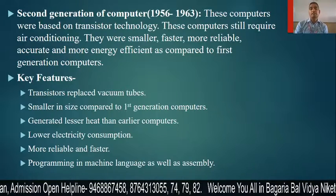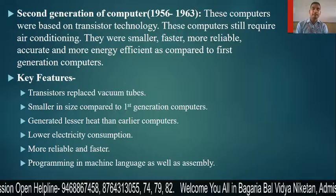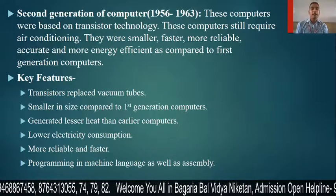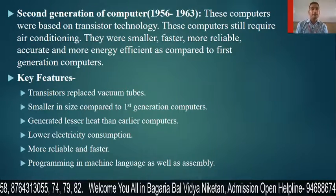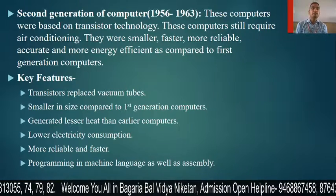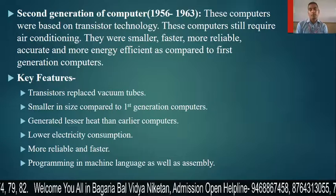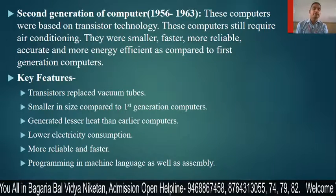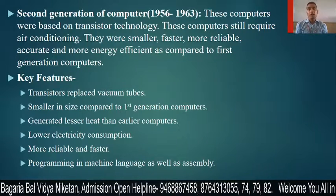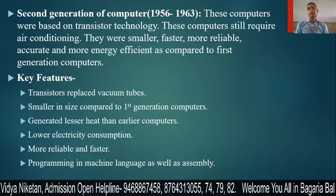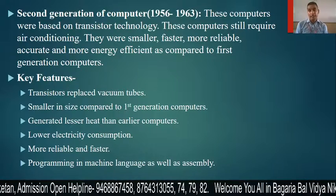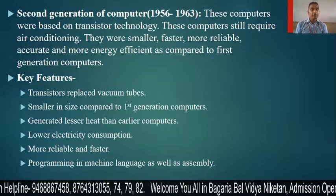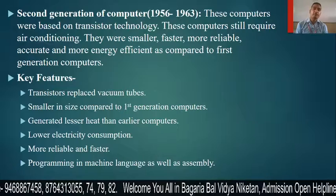If we talk about key features, the transistor replaced the vacuum tube, making the computer smaller in size compared to the first generation. It generated less heat than earlier computers and had lower electricity consumption. It was more reliable and faster. Programming was done in machine language as well as assembly language.